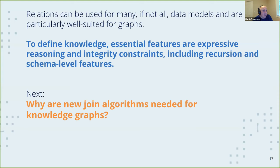We've highlighted some ingredients needed for expressive reasoning in a knowledge graph system: recursion, schema-level features, and technical strengths. A key question is how do we actually make this perform? SQL systems do not perform well if you give them a knowledge graph or graph problem. It turns out we actually need new join algorithms, and we have been part of developing those join algorithms.